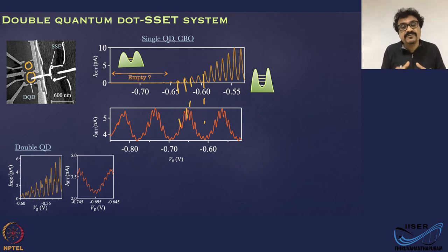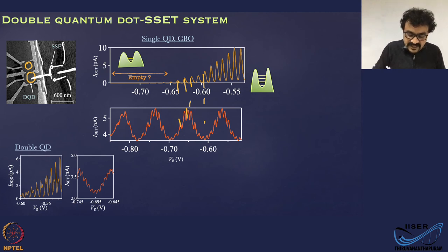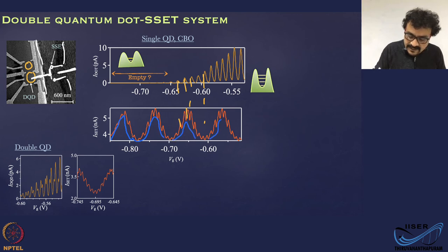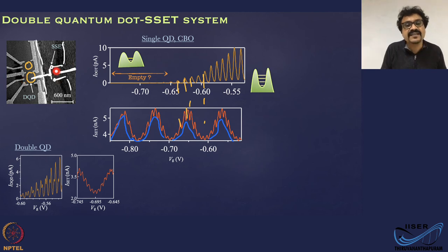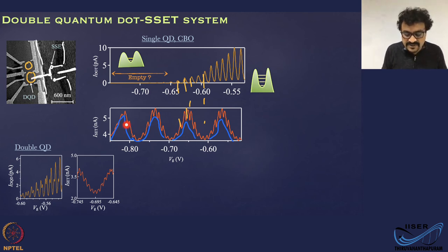Wherever you do not have Coulomb blockade oscillations in the direct measurement because the tunnel barriers got really thick, the SET — which is capacitively coupled — captures all those oscillations and charging events very clearly. This is exactly why you need a charge sensor for this kind of measurement.